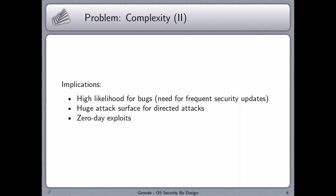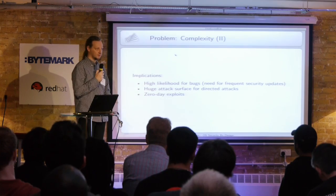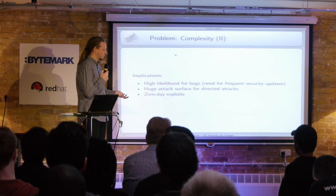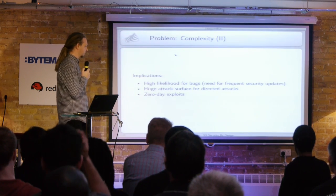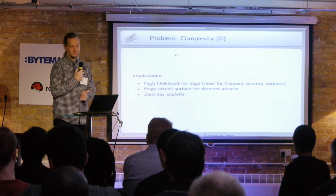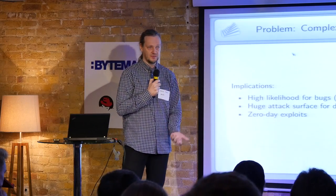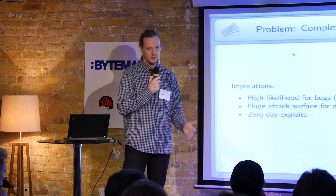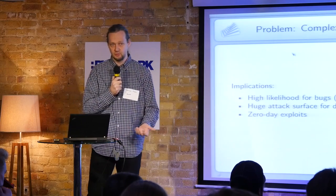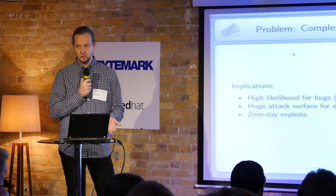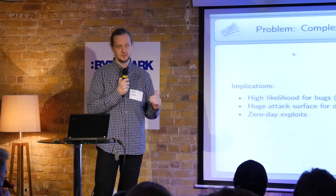If you have a lot of code, there's a high likelihood of bugs, and the code may break somewhere. Vendors try to address this by delivering security updates. But if you have direct attackers — as we've seen with the NSA scandals in recent years — this huge complexity gives you a huge attack surface. There is actually no way to circumvent zero-day exploits in current-generation operating systems. The only cure is to drastically reduce the attack surface and drastically reduce the complexity.